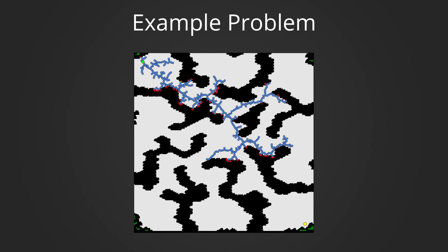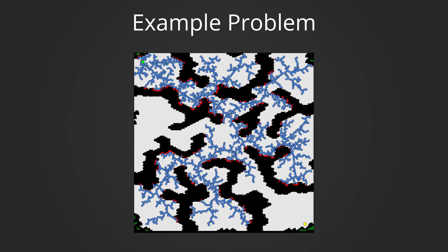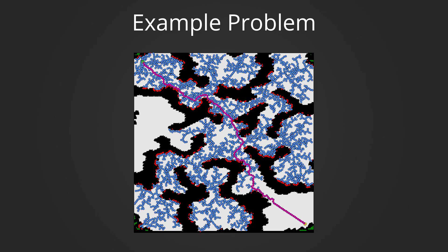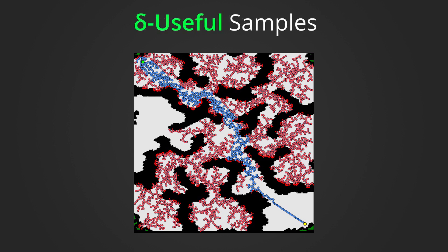We'll start building up the intuitions of our method by looking at RRT solving a path planning problem. RRT eventually finds a solution, but we see that it takes many extra residual samples and, in turn, collision check queries to construct this solution path. We formalize these residual samples as not being what we call delta useful, because the samples are either not in free space or are not within a distance of delta of the final solution path. In this case, only about 10% of the total samples taken by RRT are delta useful with the given delta.